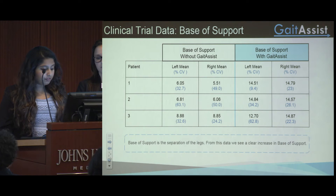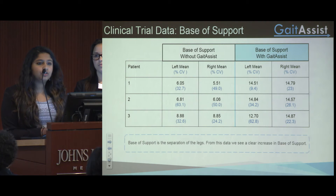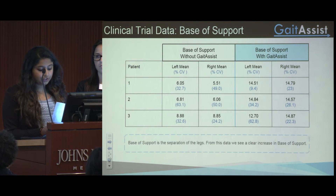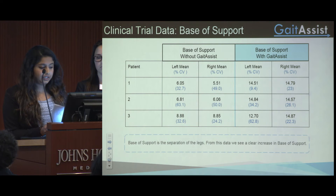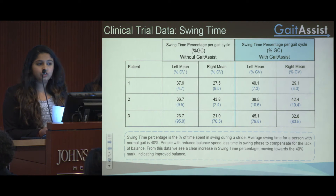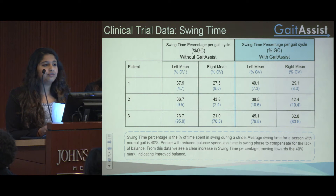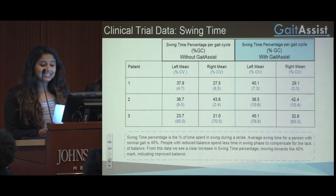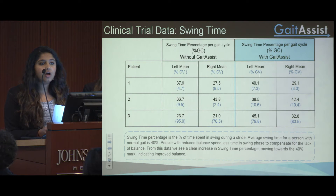This is also represented in our data. First, we shall discuss the base of support, which is a measure of the separation between the legs and a measure of stability. The wider the base of support, the greater the stability. The data clearly shows that there is an increased base of support when using our device, thus increasing the stability of the patient. Second, we shall discuss swing time percentage, which is the amount of time a patient spends in swing during the average stride. For a person with a normal gait, this is around 40% of every stride. People with reduced balance, such as patients with scissor gait, spend less time in swing to compensate for their lack of balance. From this data, we see a clear increase in swing time percentage, moving towards the 40% mark, indicating improved balance when using Gait Assist.